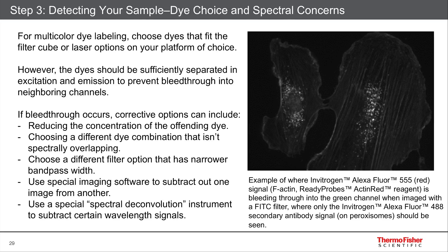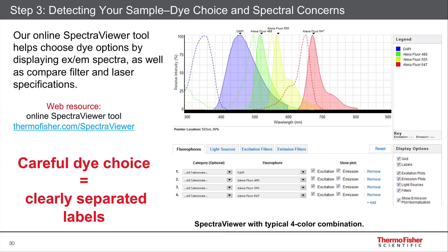You can also choose a different filter set that has a narrower bandwidth, though most people don't have a lot of filter sets to choose from, so that's not always a reasonable option. Or you can use specialized imaging software to subtract one image from another. Usually those first two recommendations are the best: reducing dye concentration or choosing dyes that are farther apart. We have a tool online called the Spectra Viewer at thermofisher.com/SpectraViewer.